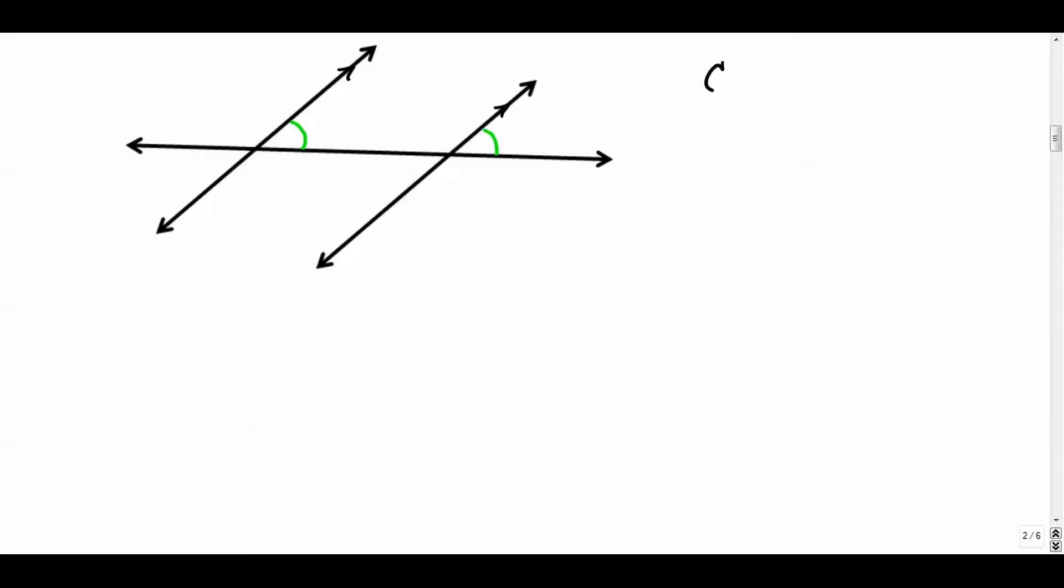Now you can see, hopefully, that this angle right here is in the top right of that particular cluster, and so is that. When they're in the same position, so they're on the same side of our transversal, and they're both to the upper right of our parallel lines, those are called corresponding angles. Corresponding meaning they're in the same position. And corresponding angles, as you can probably tell, are congruent. They have the same measure, in other words.